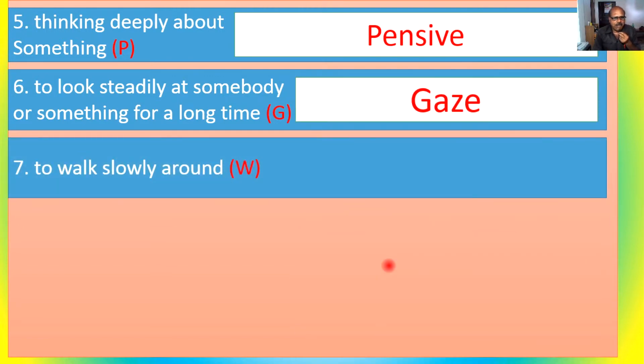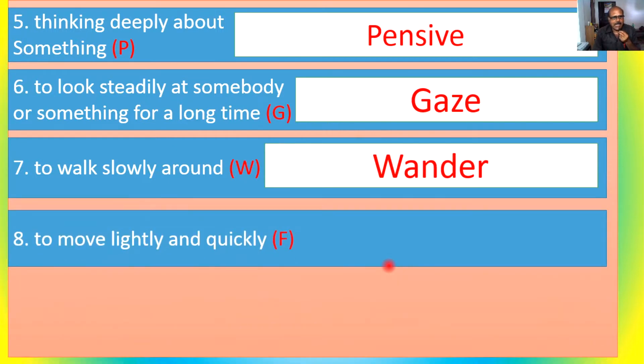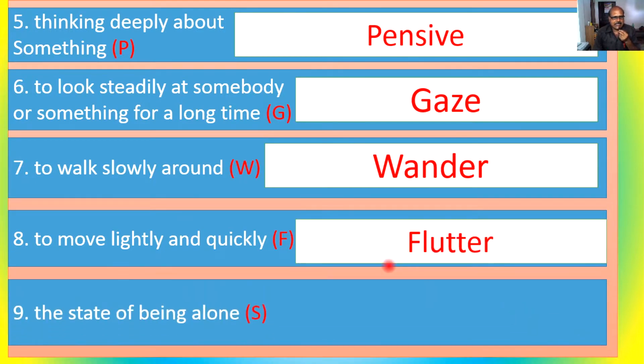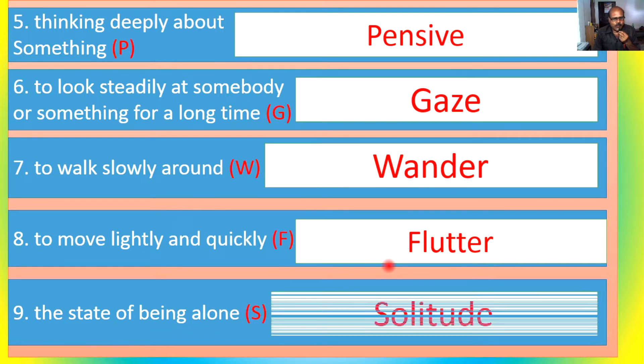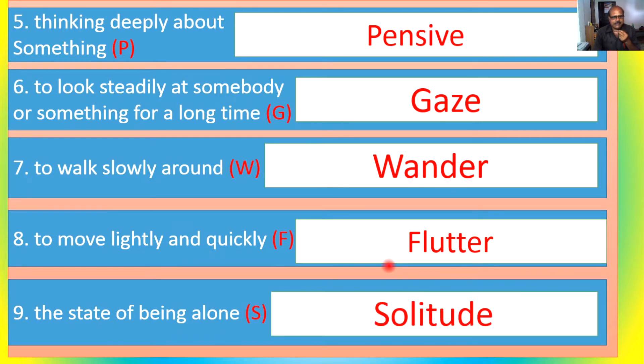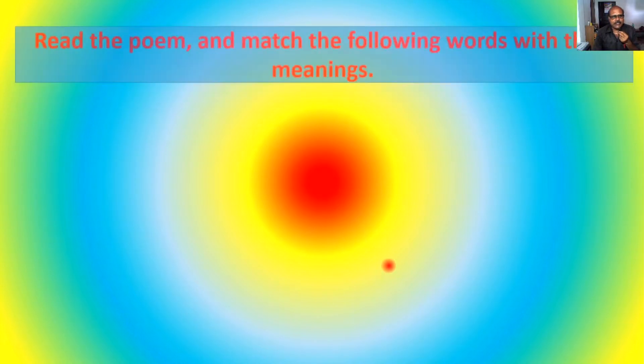Now, to look slowly around, that is the meaning - wander, that means roaming. And to move lightly and quickly - yes, flutter. And the state of being alone - yes, solitude. Its meaning is solitude.